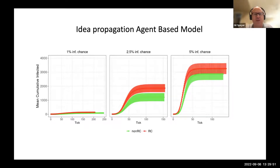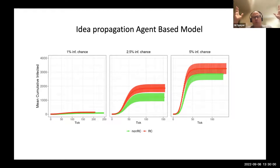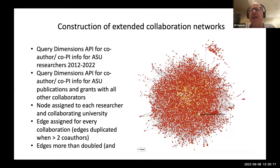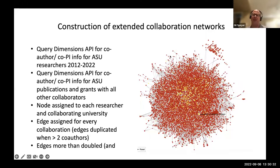We ran all these different infection chances and toyed with the model. One run produced a P value of 0.023, but it wasn't compelling. So we realized the penalty of only looking at internal collaborations means we can't even run these models reliably. We had to move on to the extended collaboration network. In the screen capture of the extended collaboration network for research computing researchers, red nodes are ASU researchers and yellow nodes are consolidated external collaborations.